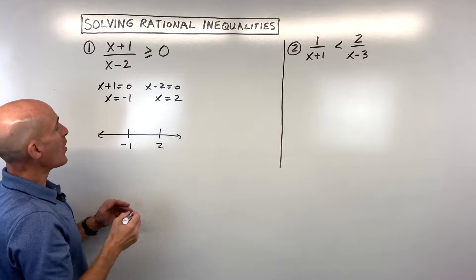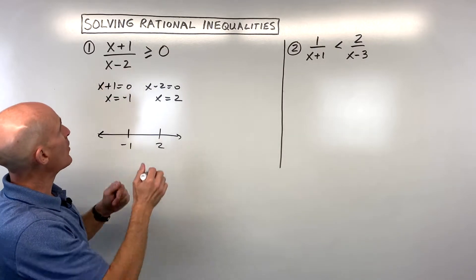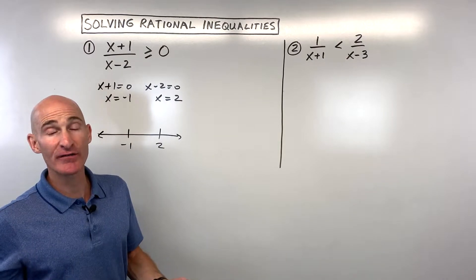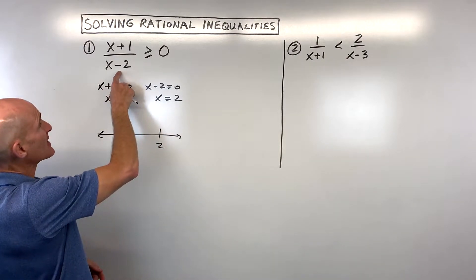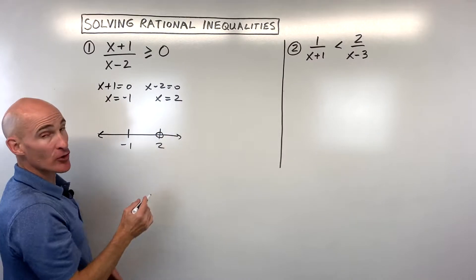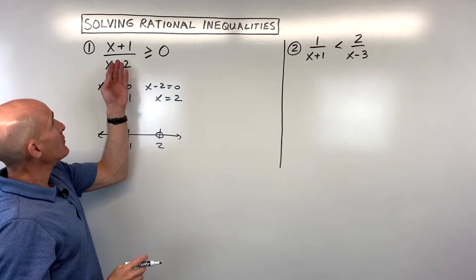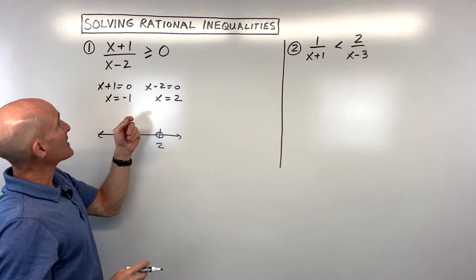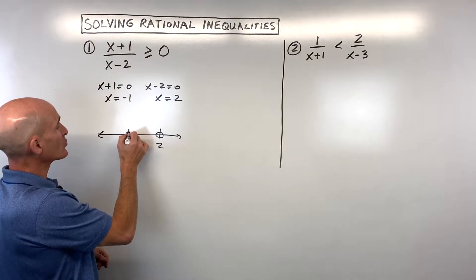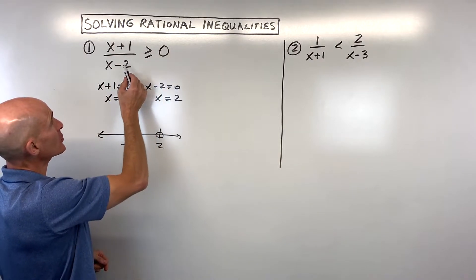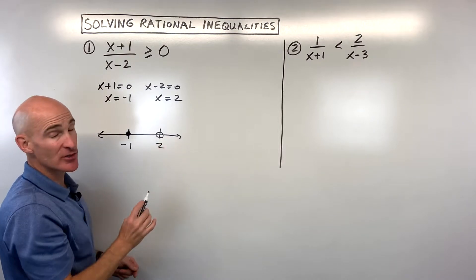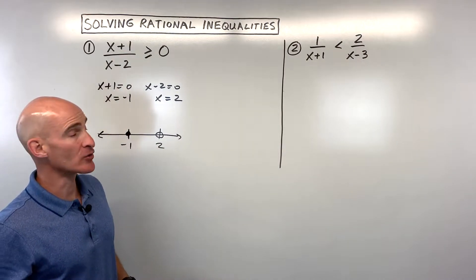The denominator can never be zero — if the denominator is zero, that's undefined. So x cannot equal two; this has to be an open circle. The numerator can actually equal zero, so at negative one this is going to be a closed circle. We're trying to find where this quantity is greater than or equal to zero. The numerator can be zero, but the denominator can never be zero, so the denominator is always going to have an open circle there.